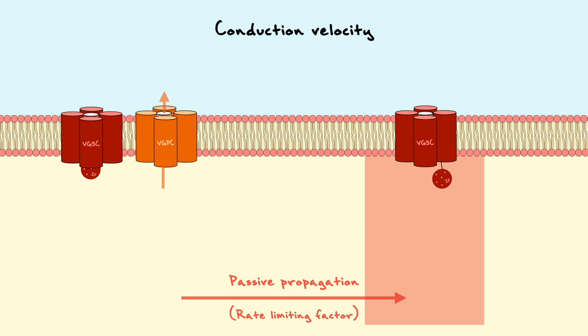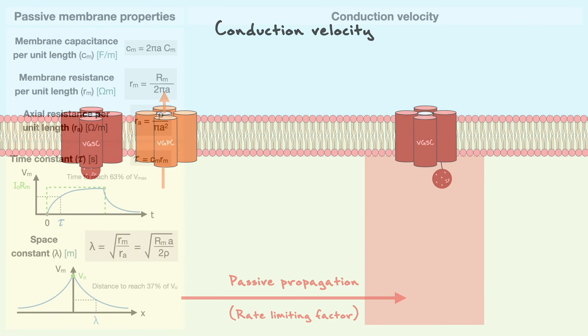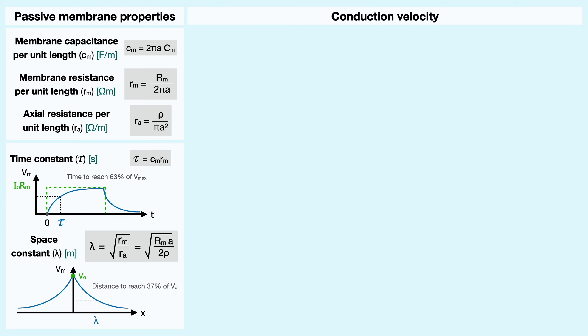Over time, evolution has provided two main mechanisms for neurons to increase their conduction velocity. Because passive propagation is mainly what governs how fast the signal travels, we have to bring back our passive membrane properties to understand how these mechanisms operate.